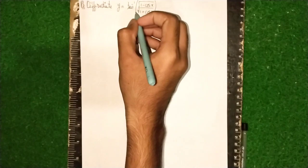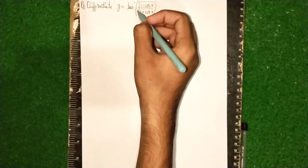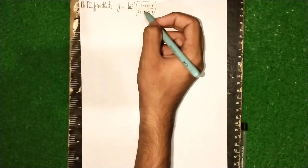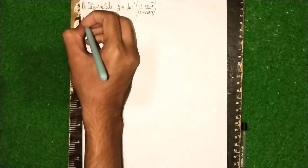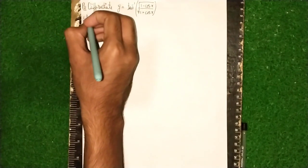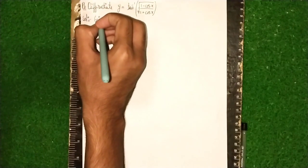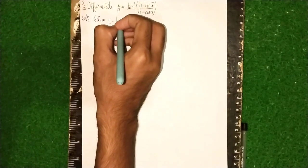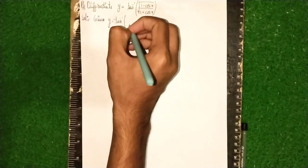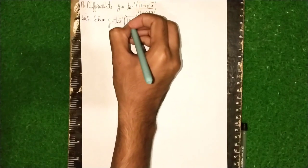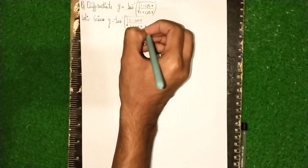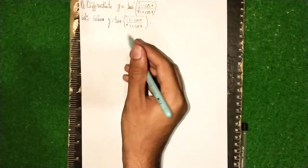Welcome back to my channel. Today's question: differentiate y is equal to tan inverse of under root of 1 minus cos x by 1 plus cos x. This is the differentiation problem, so let's write the solution. Given y is equal to tan inverse of under root 1 minus cos x by 1 plus cos x.